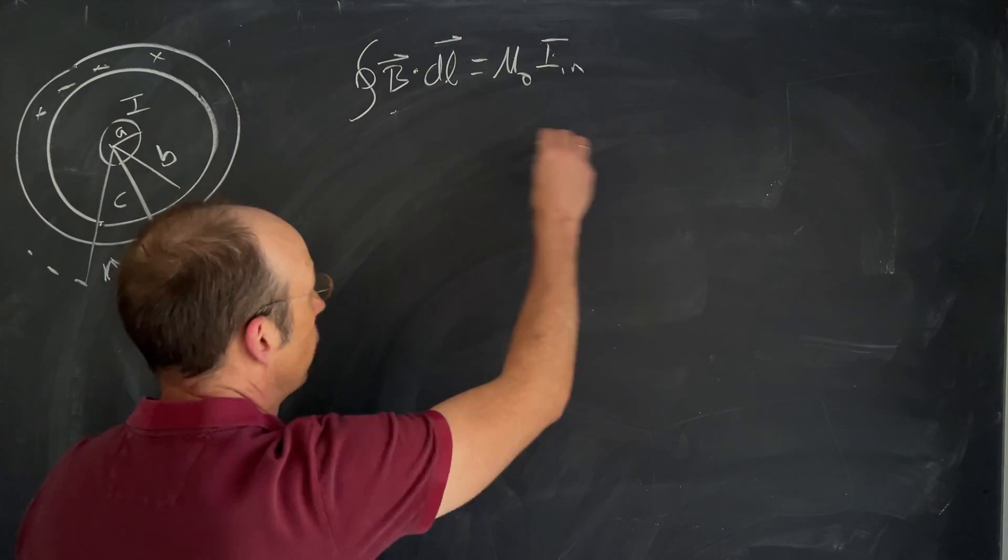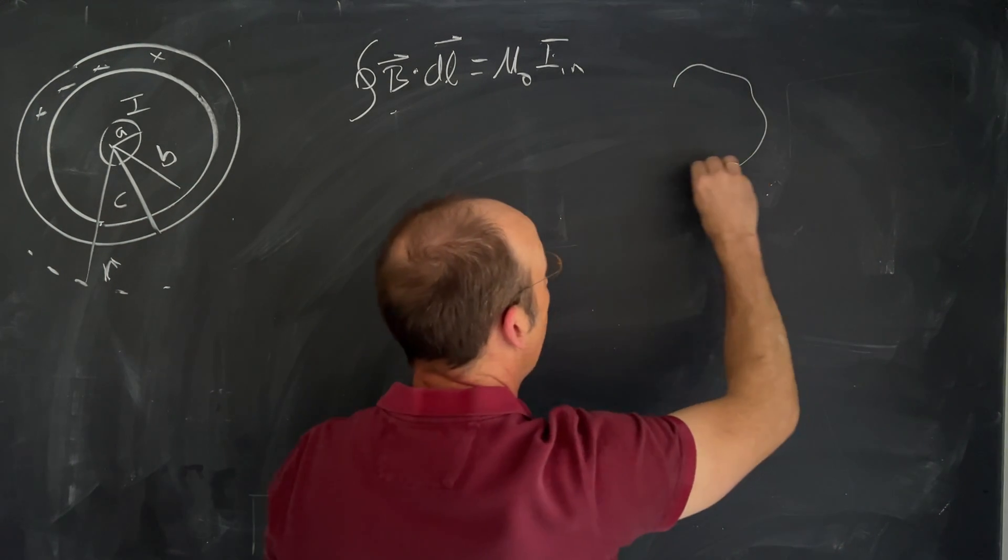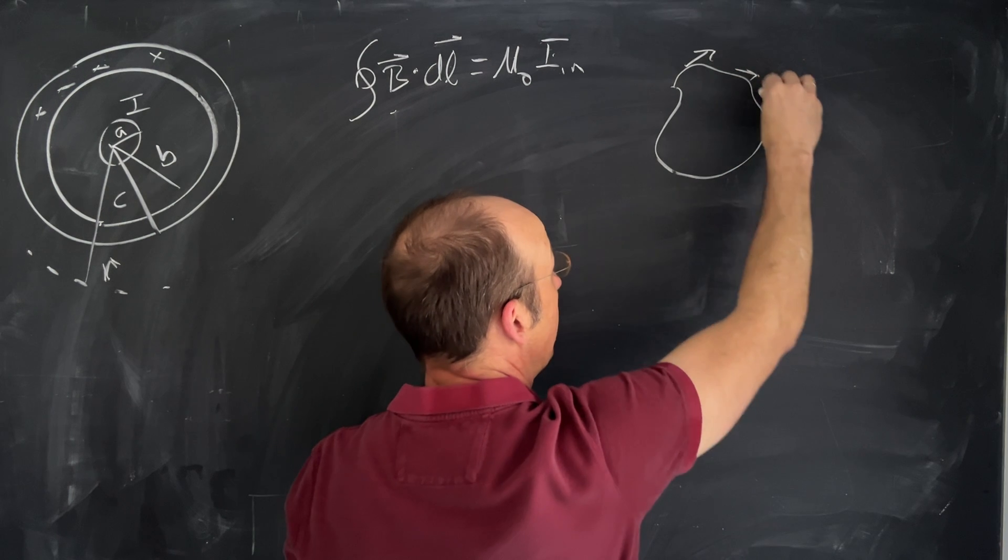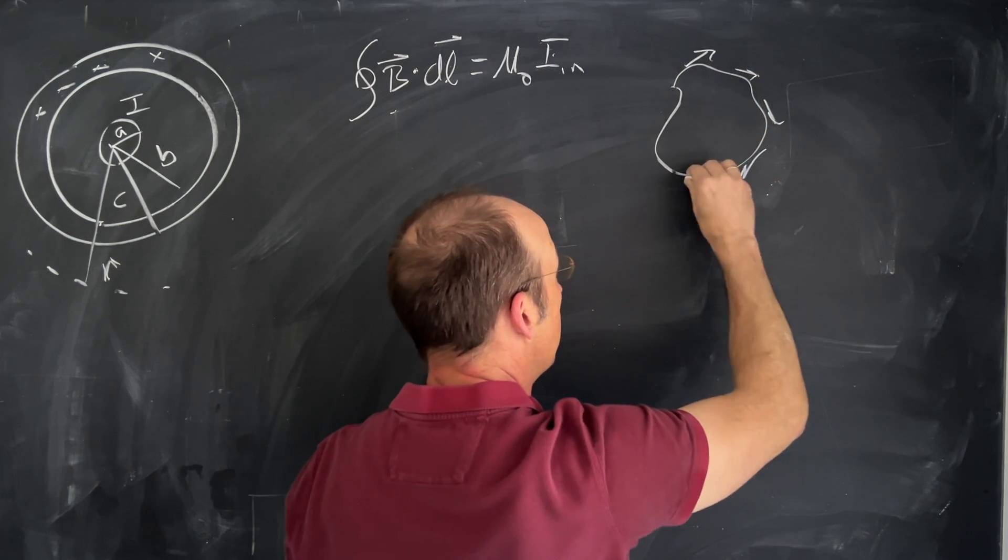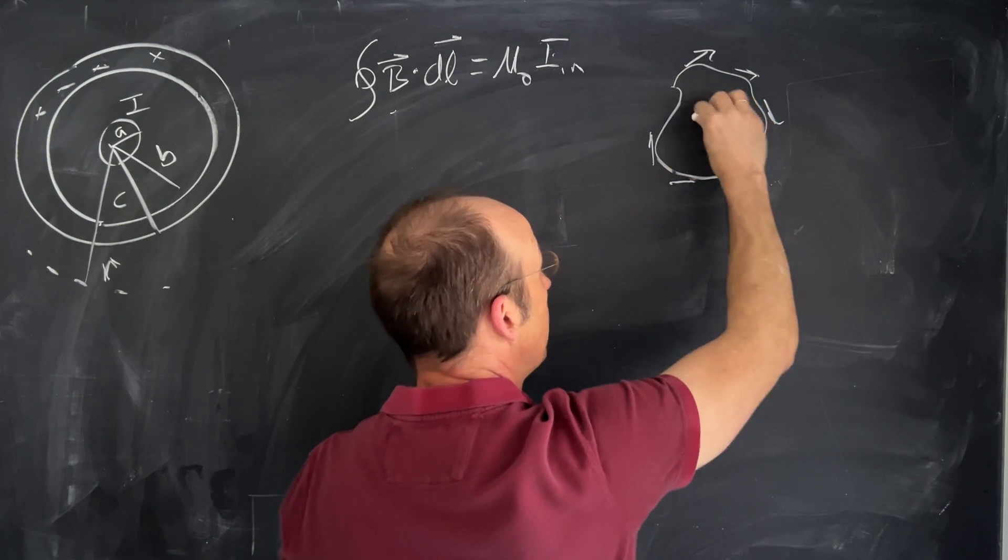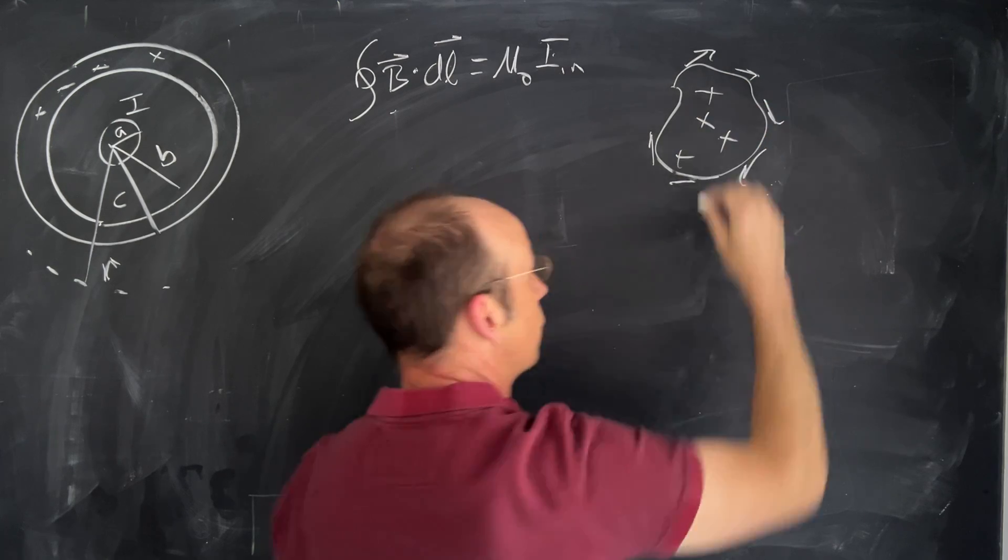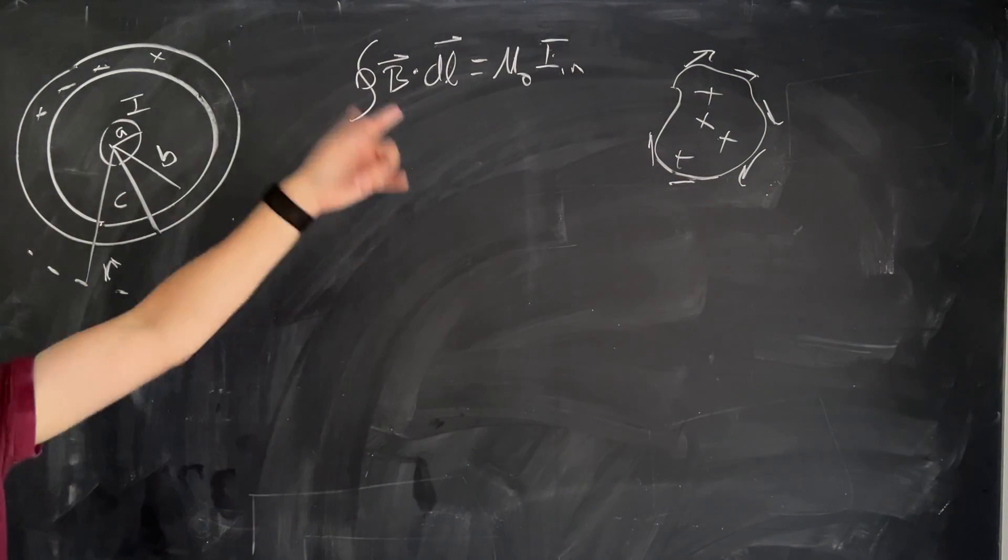Just in simple terms, if I have some shape like that and I integrate the magnetic field along that path, that'd be related to the total current passing through that surface. That's what that says. And mu naught is a constant.